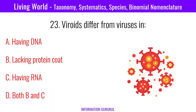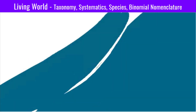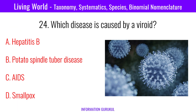Viroids differ from viruses in lacking a protein coat and having RNA. Which disease is caused by a viroid? Potato spindle tuber disease.